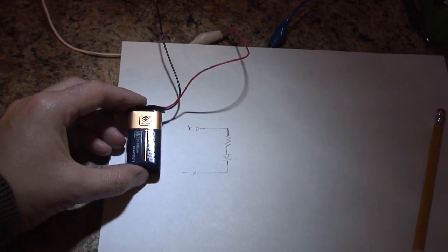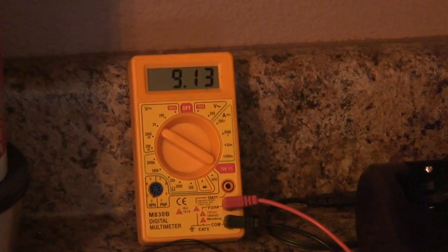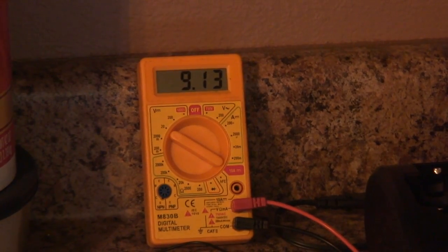Usually 9 volt batteries are not exactly 9 volts, so let's measure the voltage of this battery using a multimeter. So the voltage of this battery is 9.13 volts.